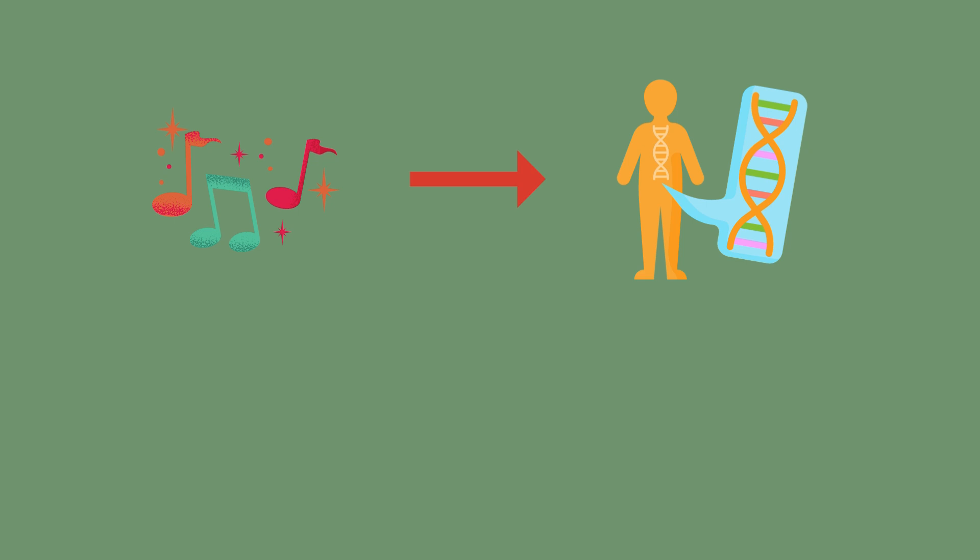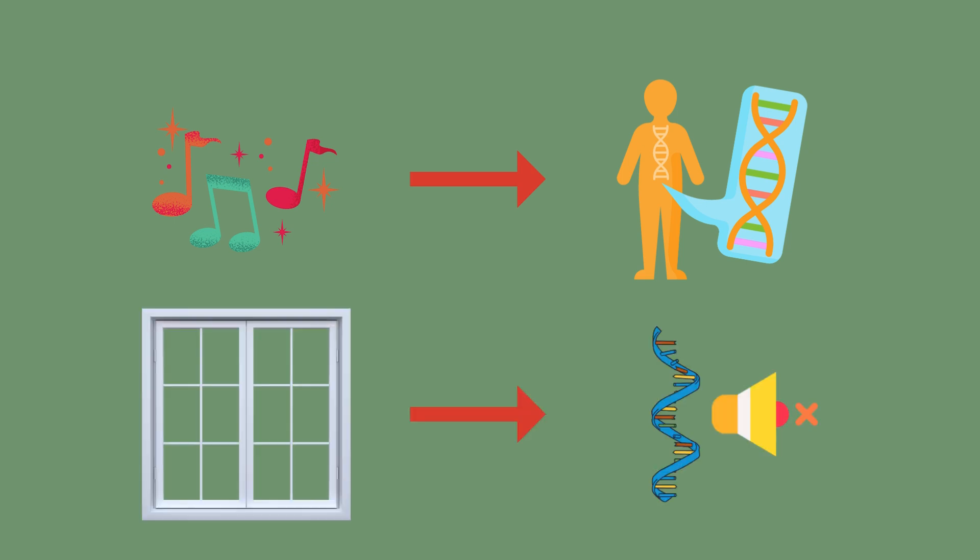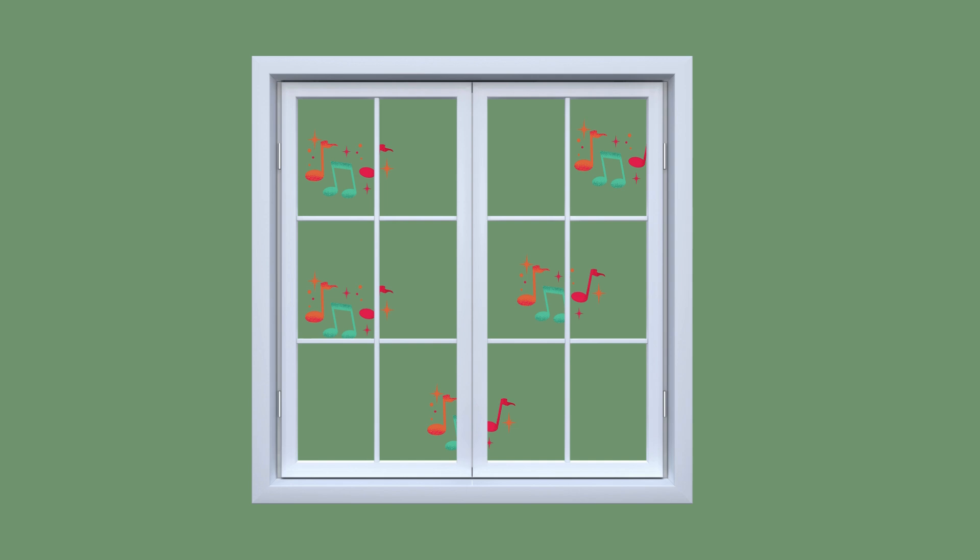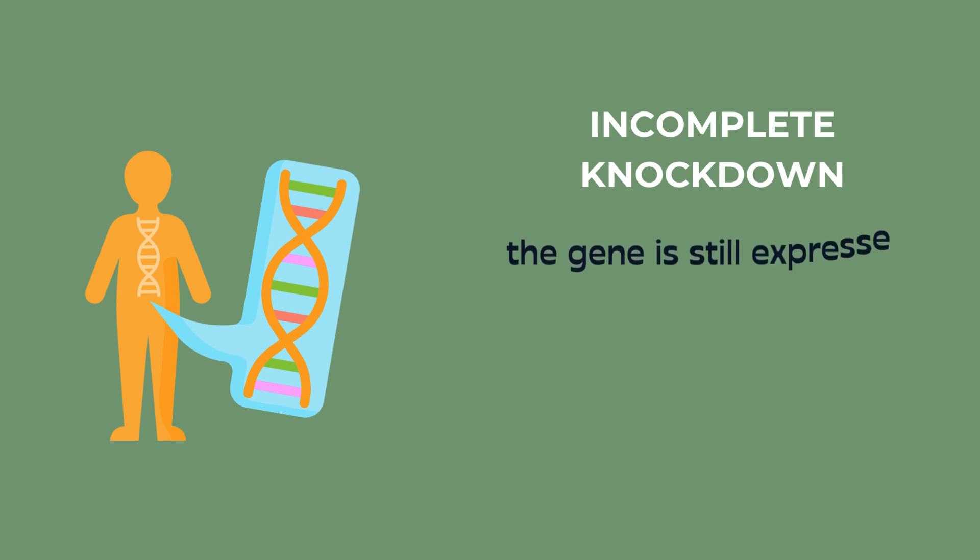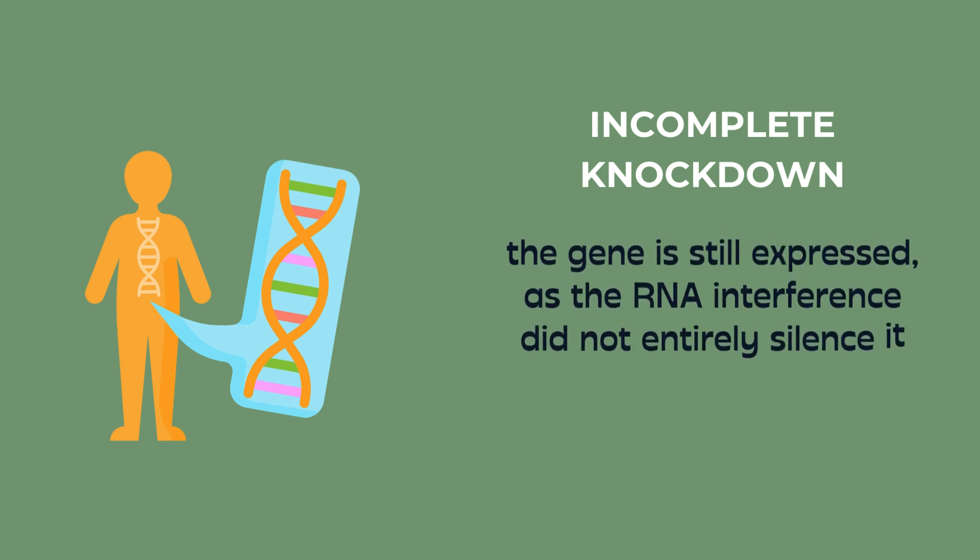In this situation, the loud music is the gene being expressed, and the closed windows are the RNA interference mechanism. Notice how once the windows are closed, the music is still audible, even though it's muffled. This is the same during incomplete knockdown. The gene is still expressed, as the RNA interference did not entirely silence it, meaning that the gene is still functional.